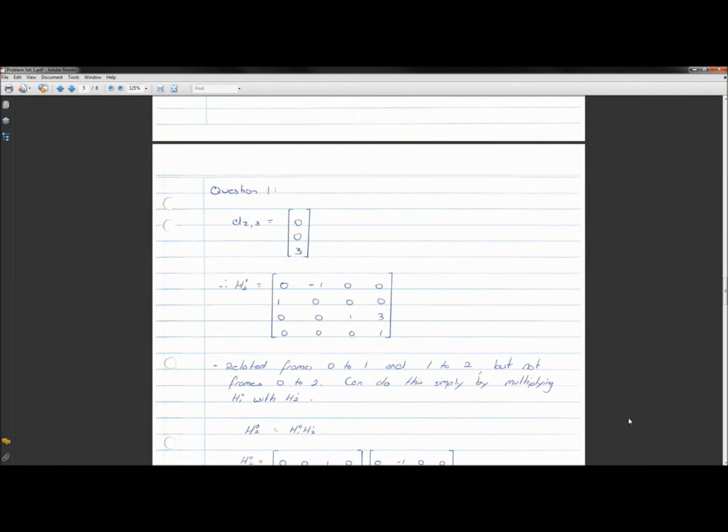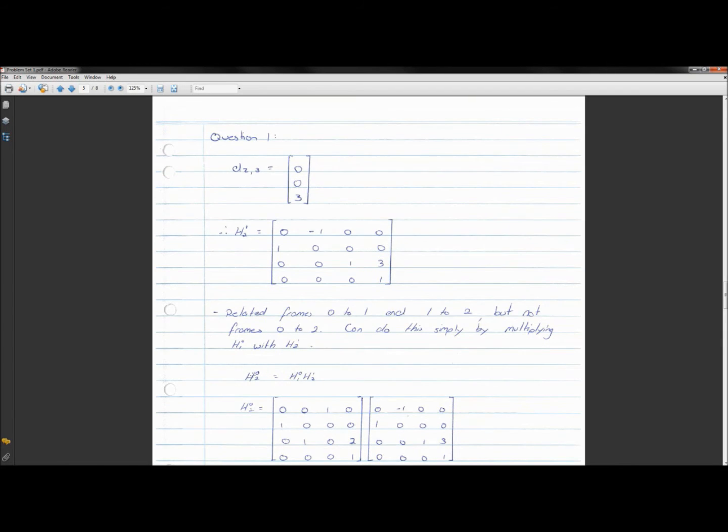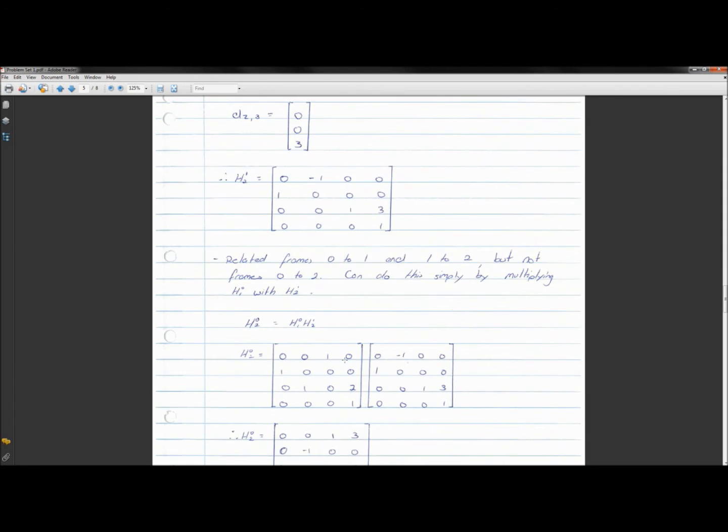So we've related frames 0 to 1 and 1 to 2, but we still need to relate frames 0 to 2. Now you could do the process of going, okay, how do we rotate reference frame 0 into reference frame 2. But to stop repetitive calculations and whatnot, as I was explaining before, we found H1,2 to stop these repetitive calculations. And what you simply have to do to find H0,2, if you've found H0,1 and H1,2, you can multiply these two things together to give us our overall matrix.